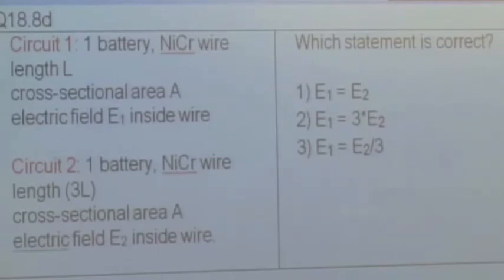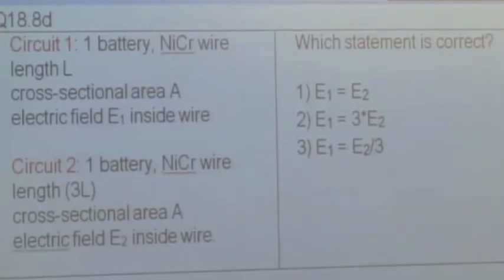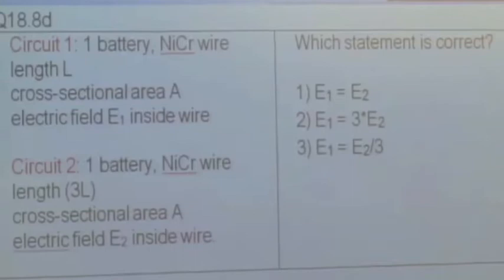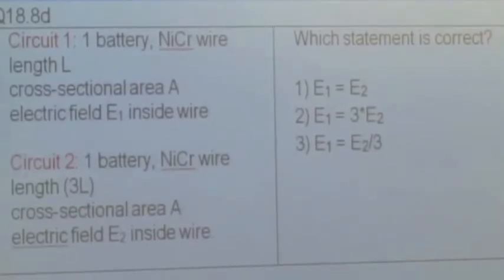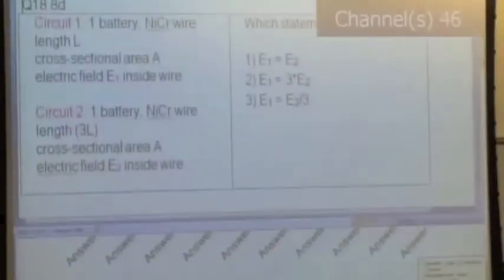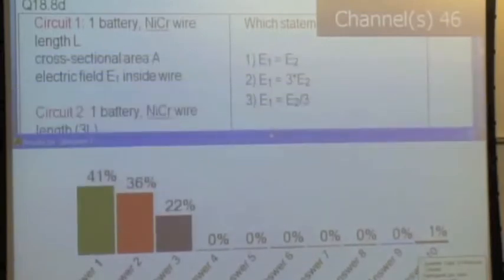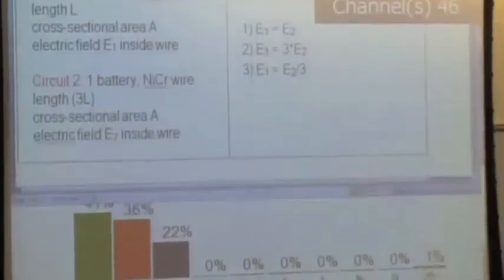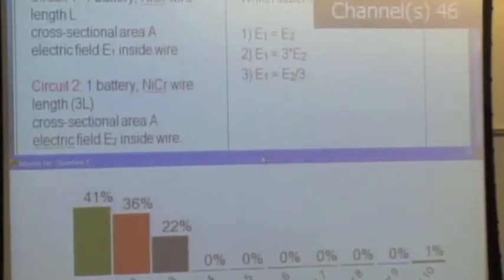How do the electric fields in the two different circuits compare? Is E1 equal to E2? Is E1 equal to three times E2? Or is E1 equal to E2 over three? I would highly recommend that you actually write out what the node rule and loop rule say for each individual circuit and get fairly simple equations.